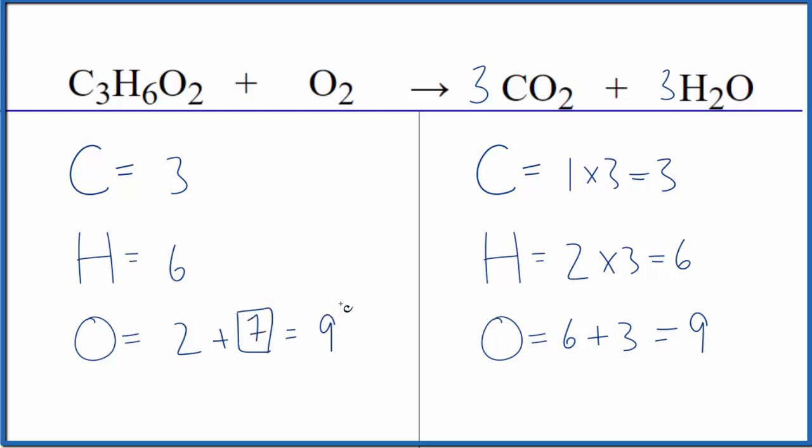That would be nine. So if we had seven oxygens here, that would work. Two plus the seven oxygens. So we're going to put a seven over two for the oxygen. So we can have a fractional coefficient. That's okay.